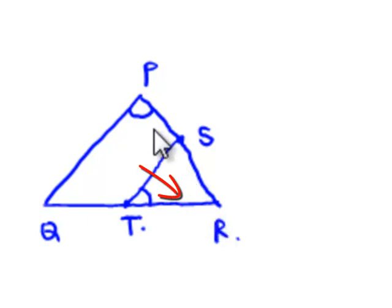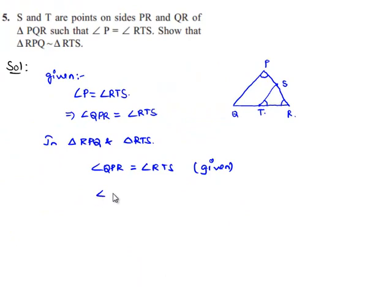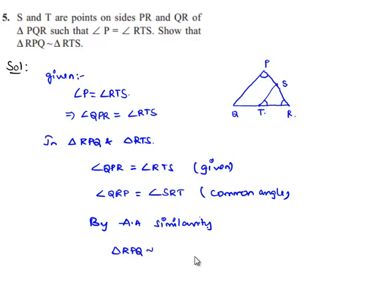And in both triangles, angle PRQ is equal to angle TRS since it is a common angle. Now by angle-angle similarity, we can say triangle RPQ is similar to triangle RTS. This is the required proof.